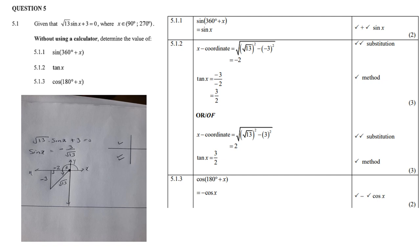So let's look at 5.1. Given: √13 sin x + 3 = 0, and x is defined between 90 and 270 degrees — the second and third quadrants. Without a calculator, sin(360 + x) should immediately remind you of the identity for 360 + x. One revolution brings you back into the first quadrant, so sin(360 + x) is the same as sin x.